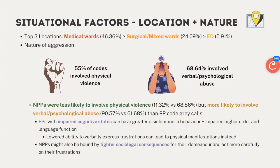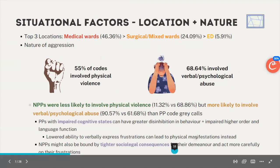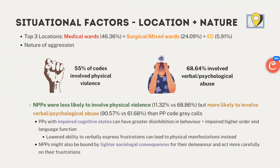The top three locations for codes were medical wards, surgical and mixed wards, followed by the ED. In terms of the nature of aggression, 55 percent involved physical violence whereas 68 percent involved verbal or psychological abuse. Non-patient perpetrators were less likely to exhibit physical violence but more likely to involve verbal or psychological abuse. We thought this was because sick patients may have impaired cognitive states leading to greater disinhibition and reduced language function, leading to physical manifestations, while non-patients may be more bound by sociological consequences for their actions.